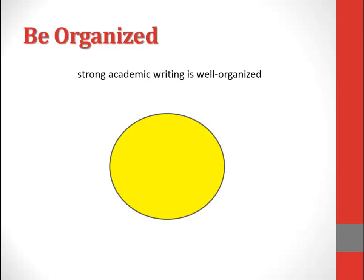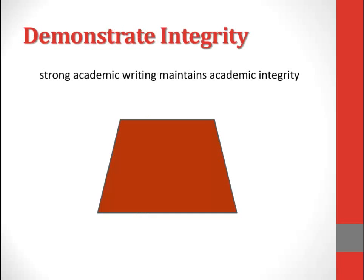The body of the writing follows that roadmap, and the paragraphs in the body follow the basic principles of paragraphing. Each paragraph focuses on one main idea, each paragraph has a topic sentence expressing the main idea, and each paragraph is linked to adjacent paragraphs by effective transitions. The paragraphs in the body are also grouped according to an organized principle. And the conclusion of the writing summarizes the main points in the argument, and might also pose new questions for further investigation or research.